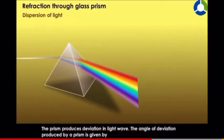The prism produces deviation in light waves. The angle of deviation produced by a prism is given by D equals (N minus 1) times A.